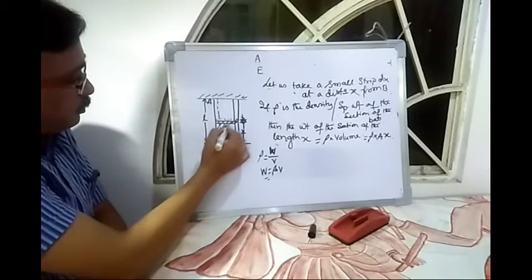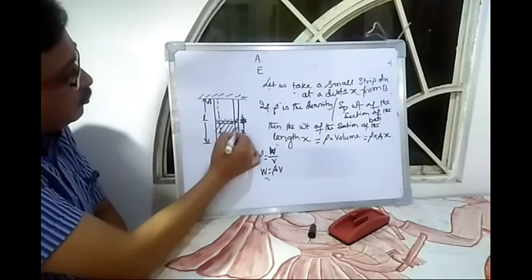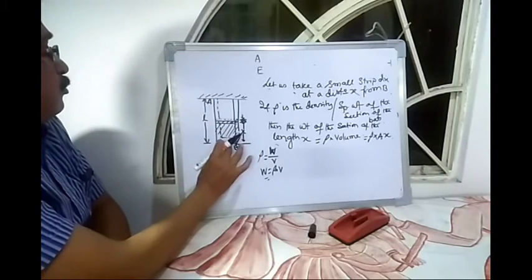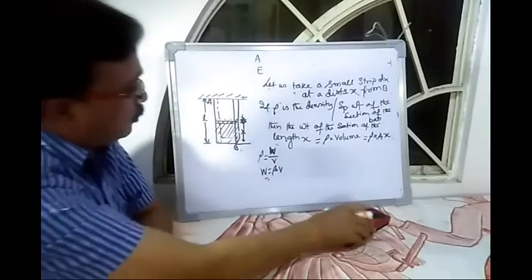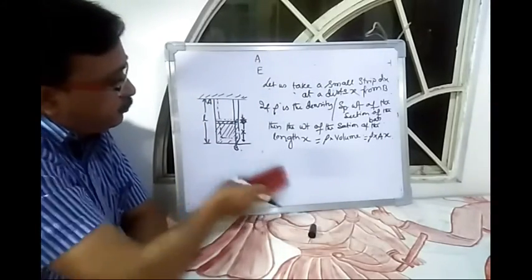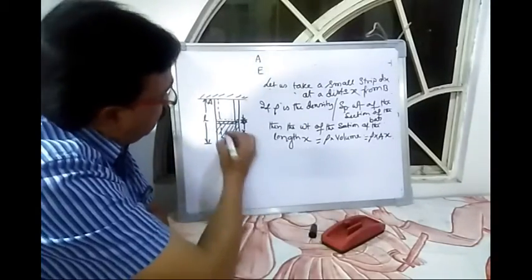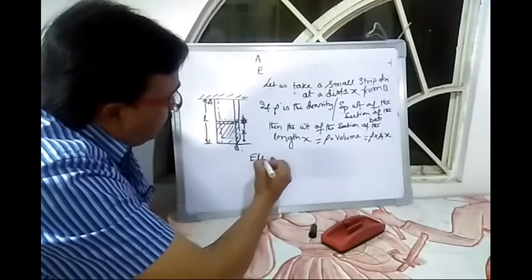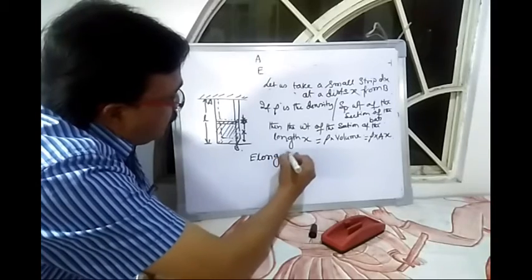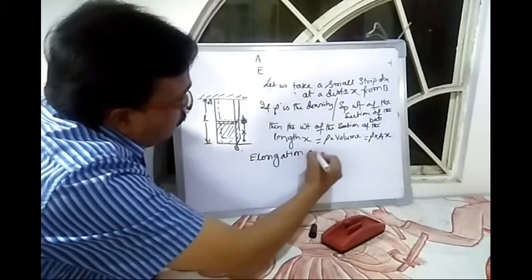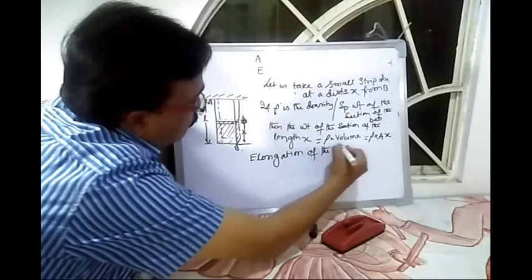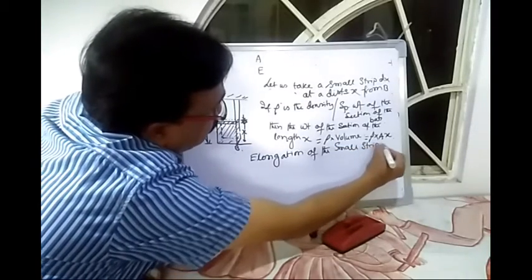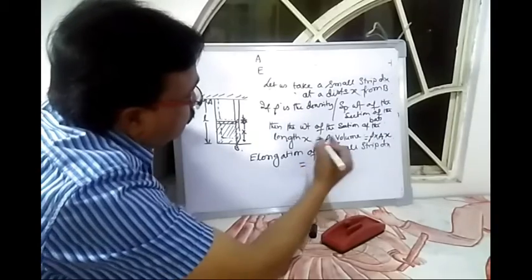This load is fully responsible for the elongation of this small strip. So the elongation of the small strip dx is equal to PL by AE.